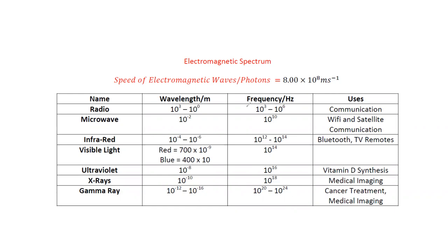At A-level, you need to learn the order of wavelength and frequency along with the names of the EM waves: radio wave, microwave, infrared, visible, ultraviolet, X-ray, and gamma. Radio waves have the longest wavelength and lowest frequency; gamma rays have the shortest wavelength and highest frequency.